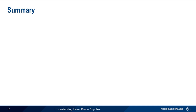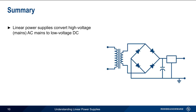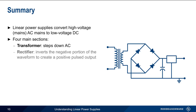Let's end with a brief summary. Linear power supplies are used to convert higher voltage mains AC to lower voltage DC, typically for use in electronic devices or for charging batteries. In this presentation, we covered the four main sections of a linear power supply. First, a transformer is used to step down the higher voltage input AC to a lower voltage. Next, a diode-based rectifier inverts the negative portion of the input waveform in order to create a pulsed positive output.